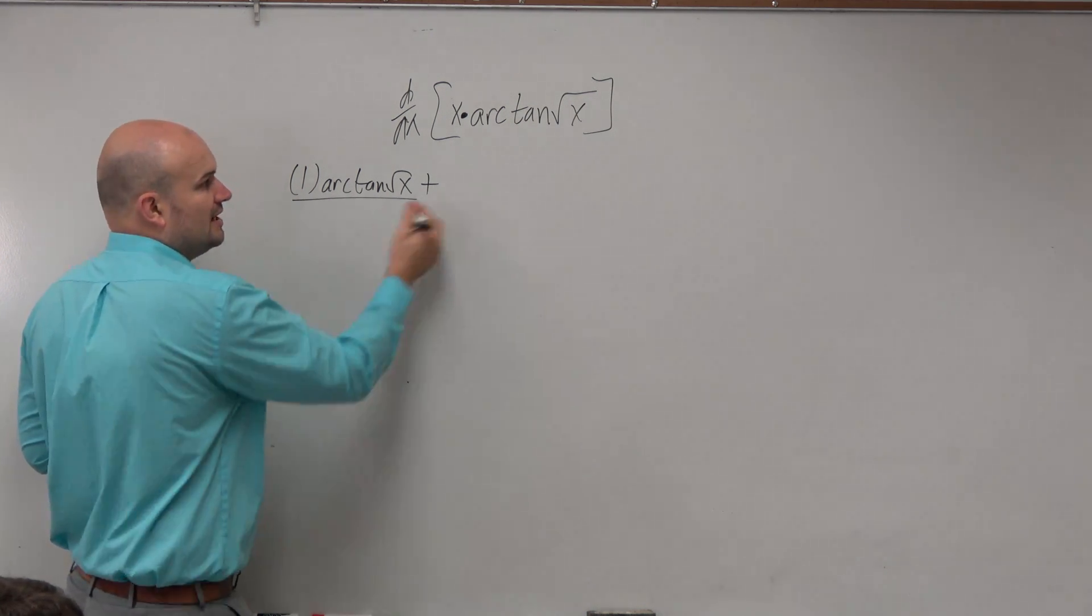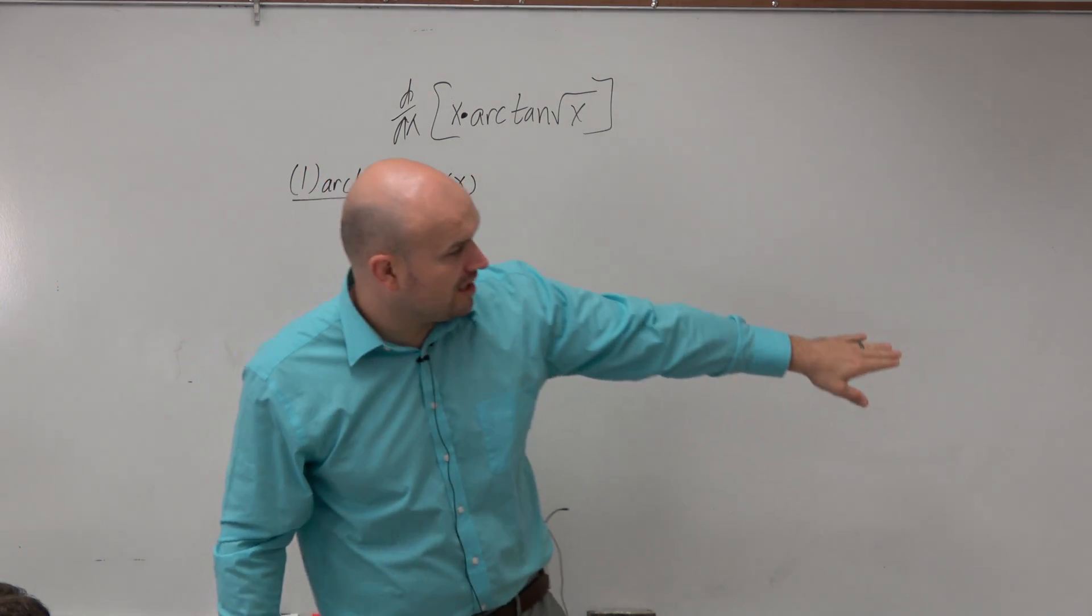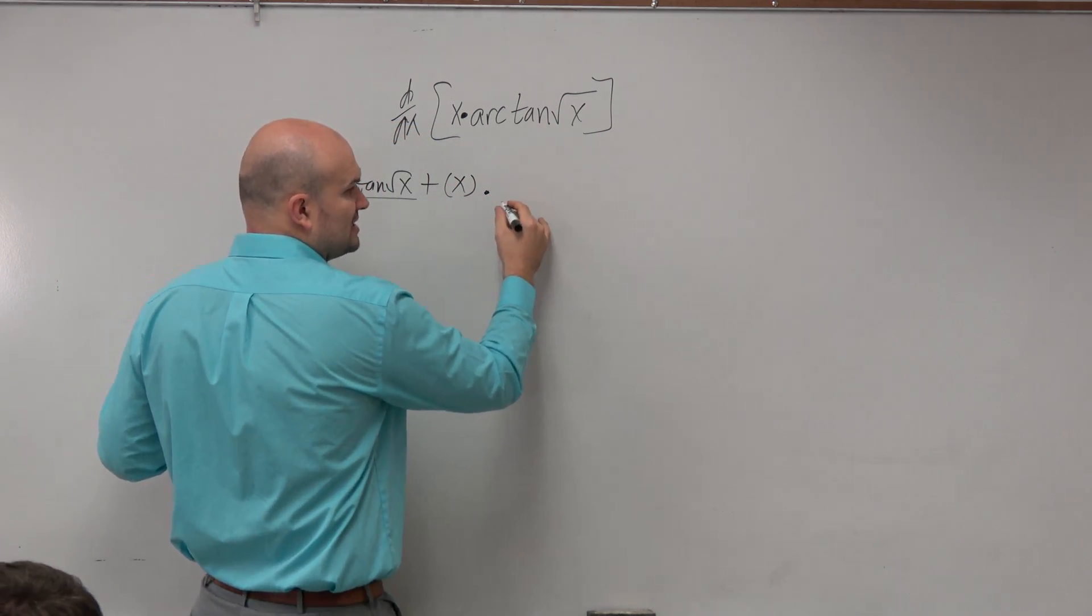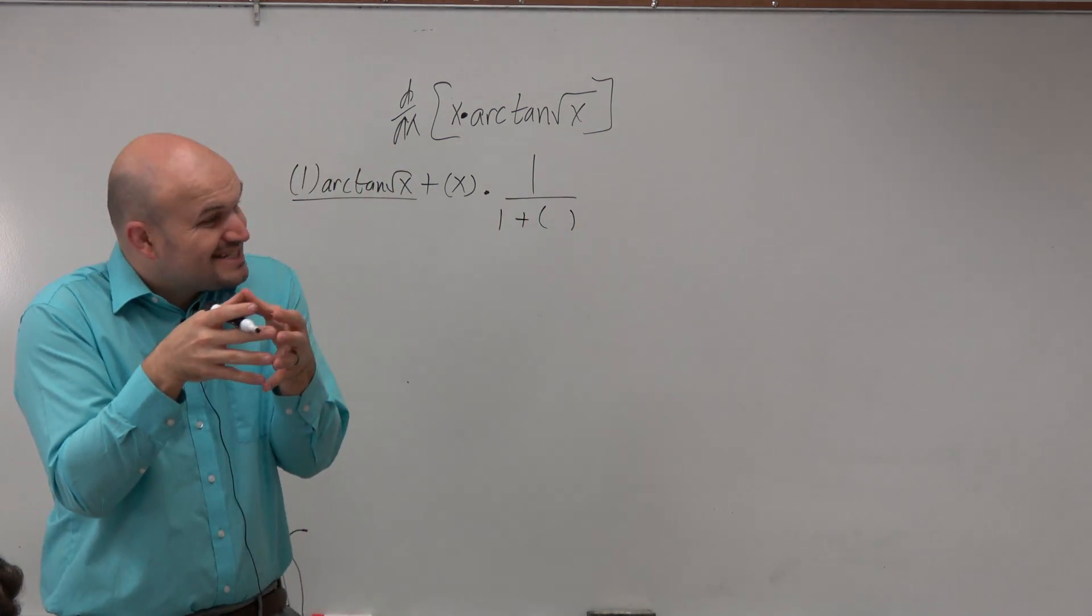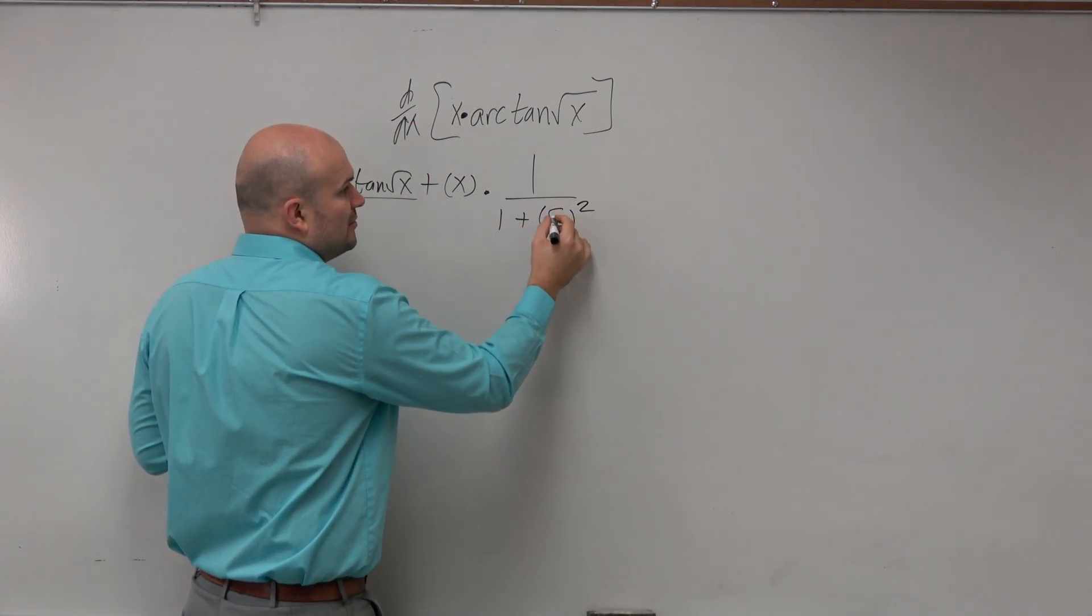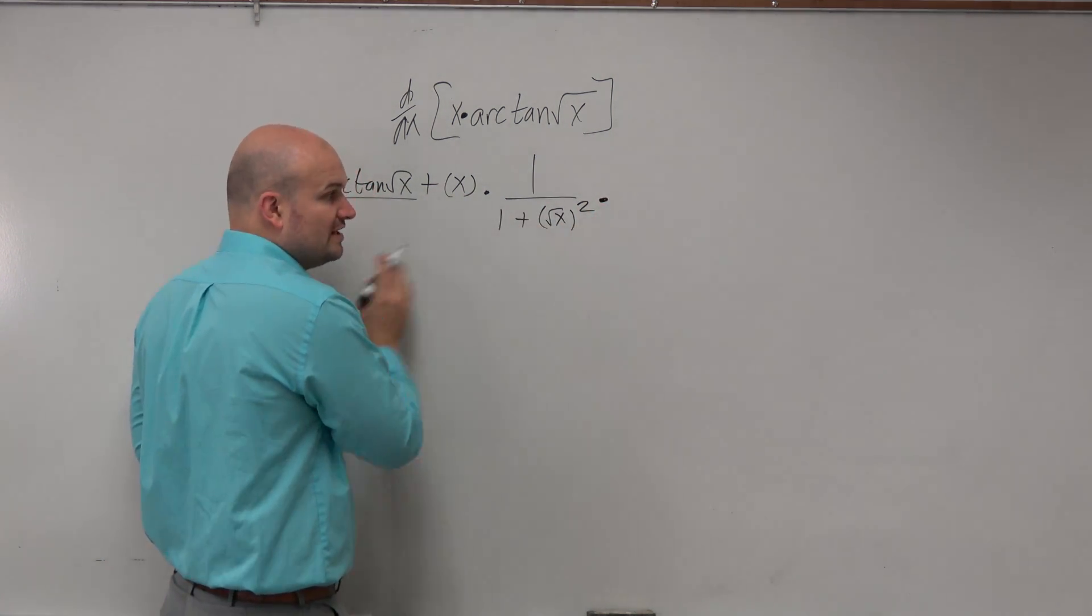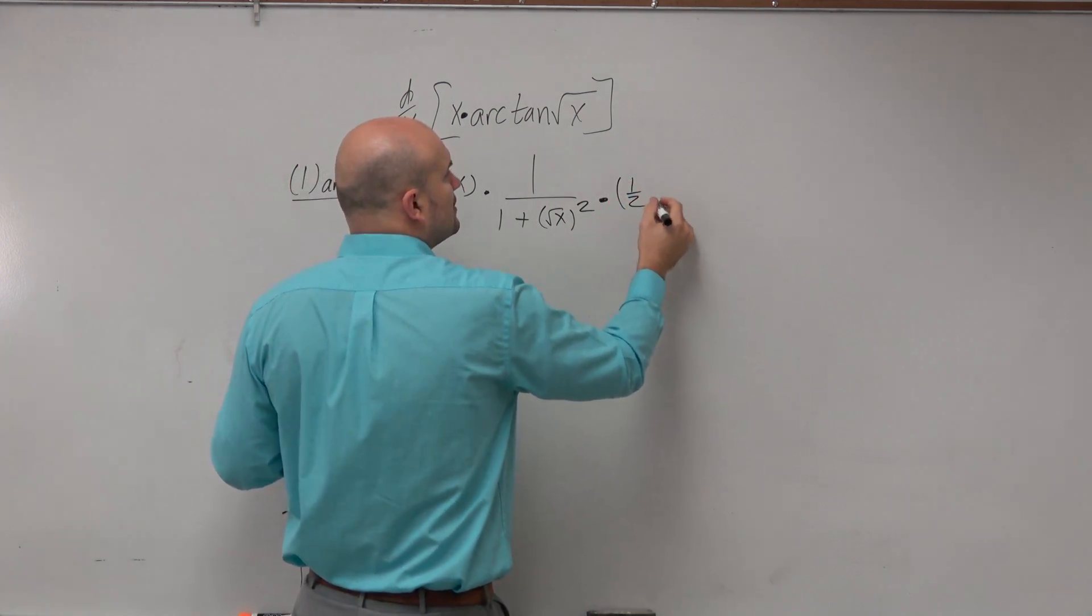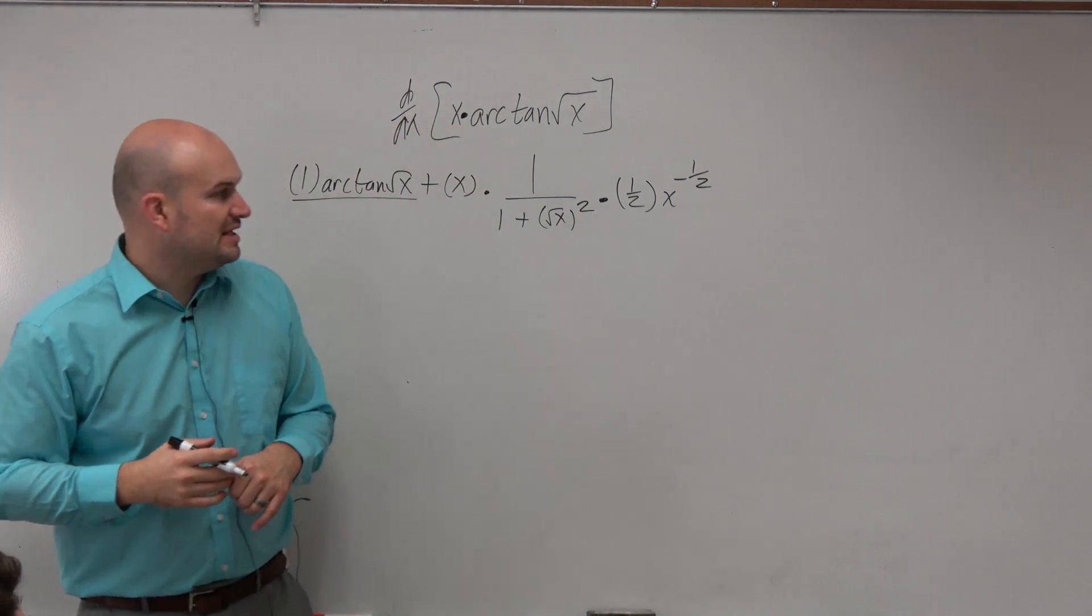The next one, though, is going to be x times the arctan of square root of x. So again, applying our inverse tangent, what we're going to have is we're going to multiply this 1 over 1 plus whatever my inside of my function is squared. Well, the inside of my function is the square root of x. And then times the derivative of the square root of x, which hopefully by this point we feel pretty comfortable with.